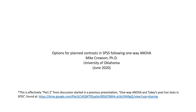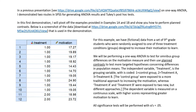I will also include a link to the SPSS data file so you can download the data and follow along. We're following from example one in the previous presentation. We have fictional data from a set of ninth grade students who were randomly assigned to one of three treatment conditions designed to increase their motivation to learn. We're going to perform a one-way ANOVA to test for omnibus group differences on the motivation measure.